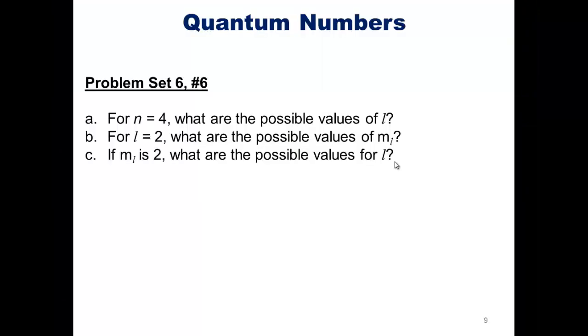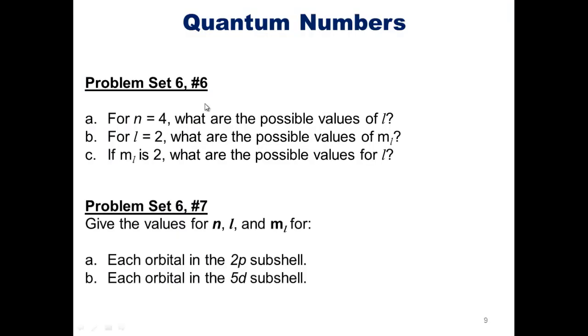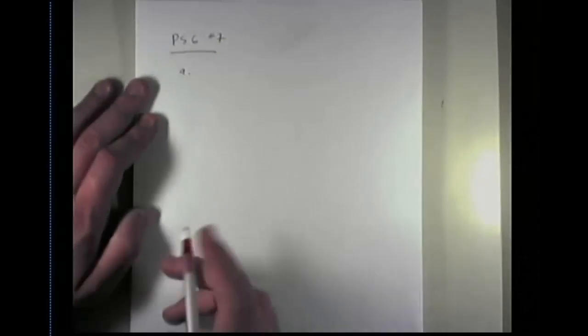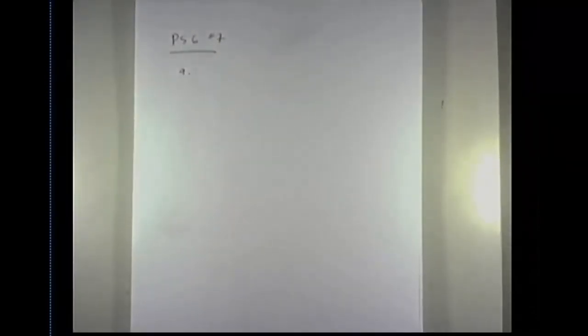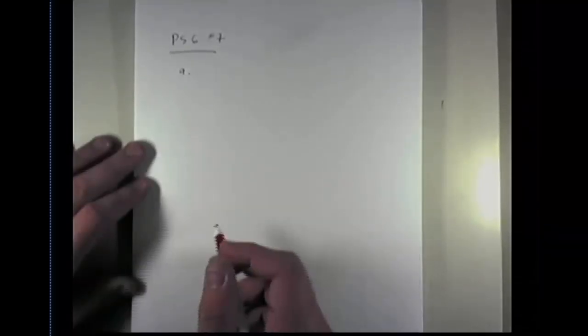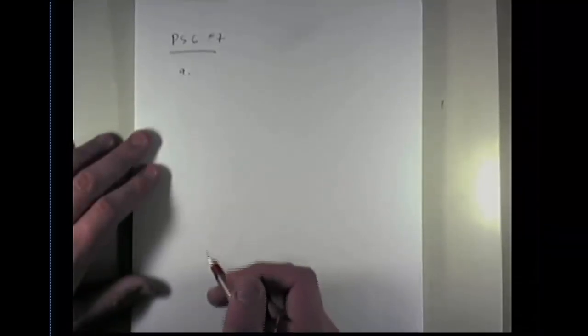So the answers are two or three. And now we'll move on to question seven from problem set six. Give the values of n, l, and m sub l for each orbital in the 2p subshell and each orbital in the 5d subshell. Once again, if you guys want to, you're welcome to try these on your own before looking at me giving you the answers.